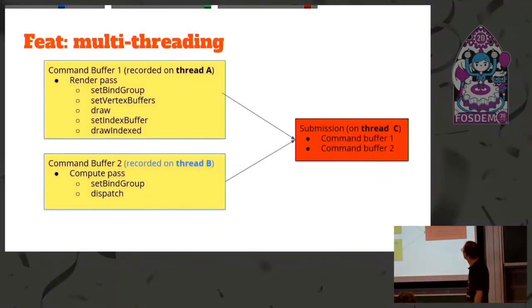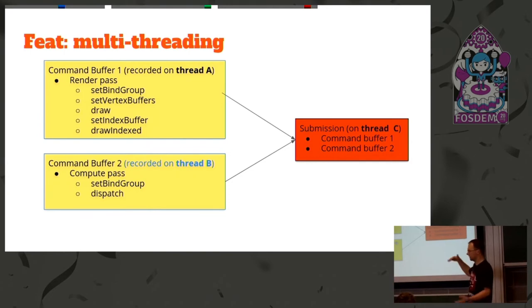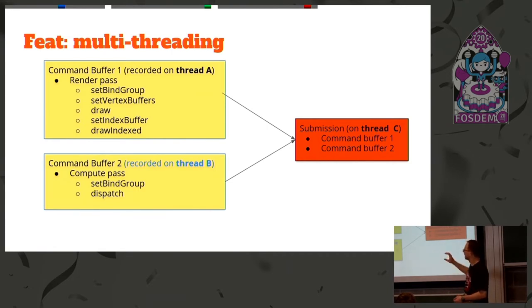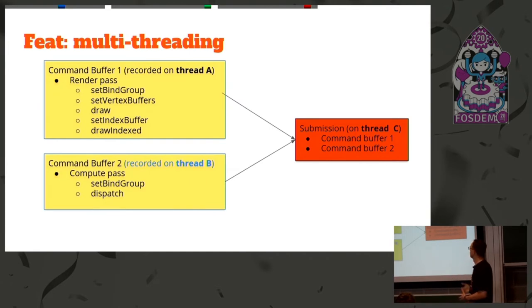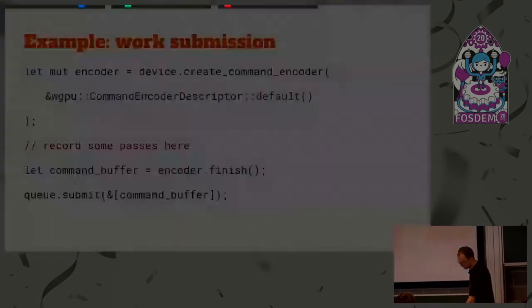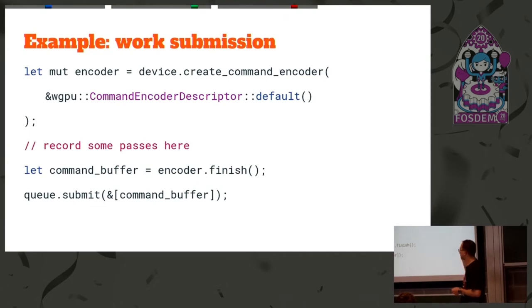Multi-threading is something all the new APIs support. In this example there are three threads: on the first thread we record the big render pass; on the second thread we record some compute work. At that stage we don't know exactly when it's going to be executed — we just tell it what to do. Then we send it to the thread that owns the queue and say: submit first, then second. That's where the order is set. All of these can be on separate threads — especially important on mobile devices where we have many threads but perhaps not very powerful ones. You create an encoder, the encoder can have compute or render passes, you finish the encoder and get a command buffer, which you send to the queue.